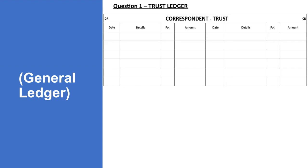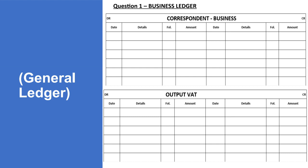I'm going to open what we call the correspondent trust account. As a correspondent, when I collect money, that money must go into the trust — I must not touch it, because it belongs to the trust. I'm also going to open the correspondent business account, because as the instructed attorney we're also running a business. We need to account for what belongs to our business. Sometimes we pay expenses on behalf of the client from our own business account, but we then deduct those from the client.